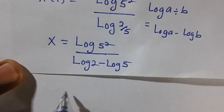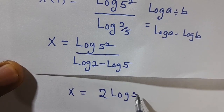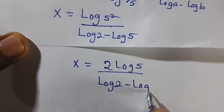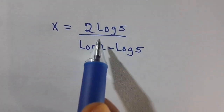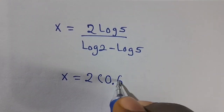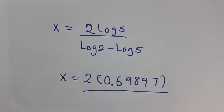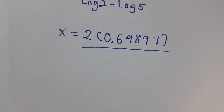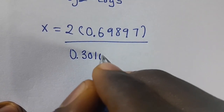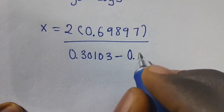So x equals 2 log 5 divided by log 2 minus log 5. Substituting values: 2 multiplied by log 5 equals 2 times 0.69897, and log 2 equals 0.30103, and log 5 equals 0.69897.